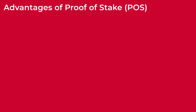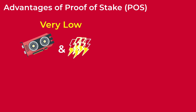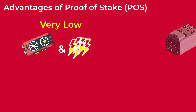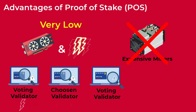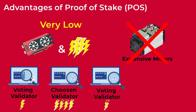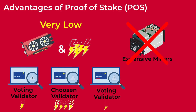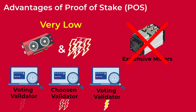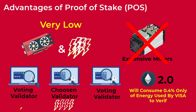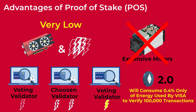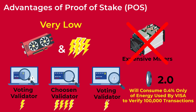Let's now move on to the advantages of using the proof of stake mechanism. The most obvious benefit is the very low energy and power consumption, compared to proof of work, as it doesn't require validators to buy expensive computer hardware that consumes insane amounts of electricity to solve complex mathematical problems. The validator that gets chosen consumes energy to verify the block, and the other validators use way less energy to vote on his work, so it is much more environment-friendly than proof of work. Ethereum developers claim that the Ethereum network will consume only 0.4% of the energy used by the Visa network to verify the same 100,000 transactions when they switch from proof of work to proof of stake.